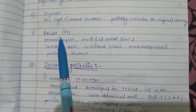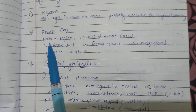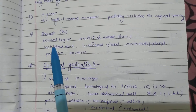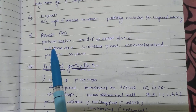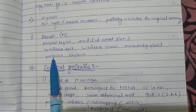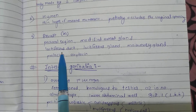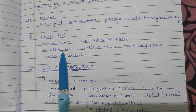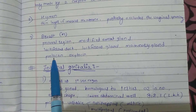The breast — two in number — is present in the pectoral region. It is a modified sweat gland. It contains lactiferous ducts, lactiferous glands, and mammary glands. It is affected by prolactin and oxytocin.